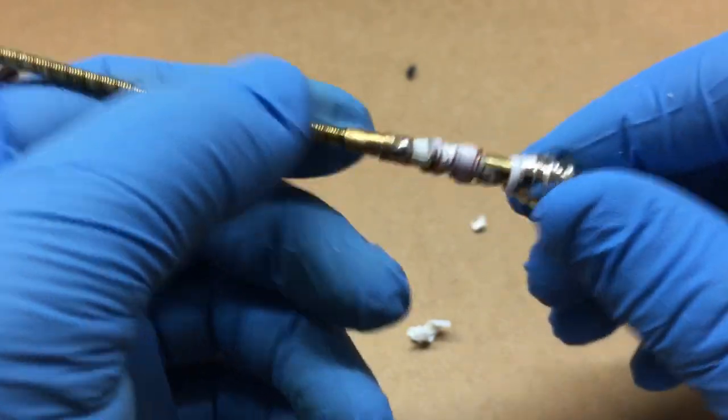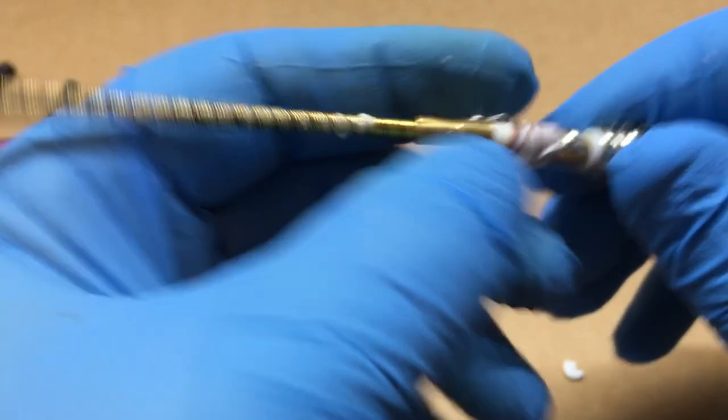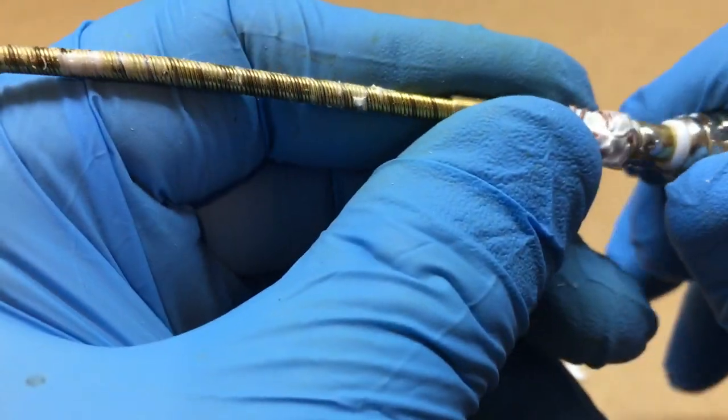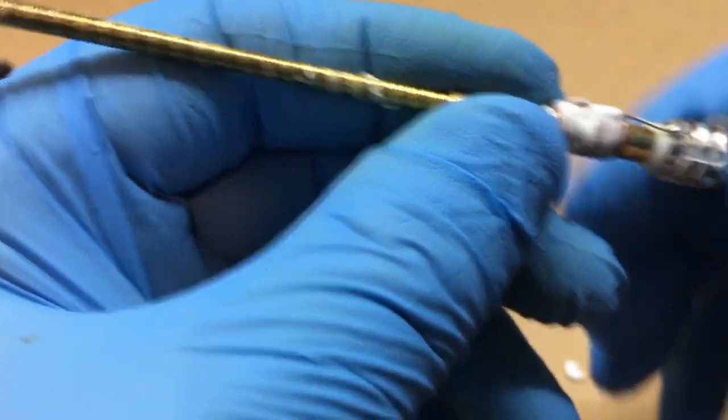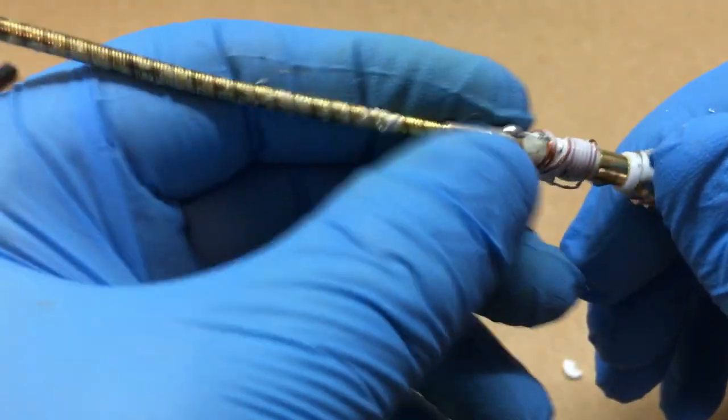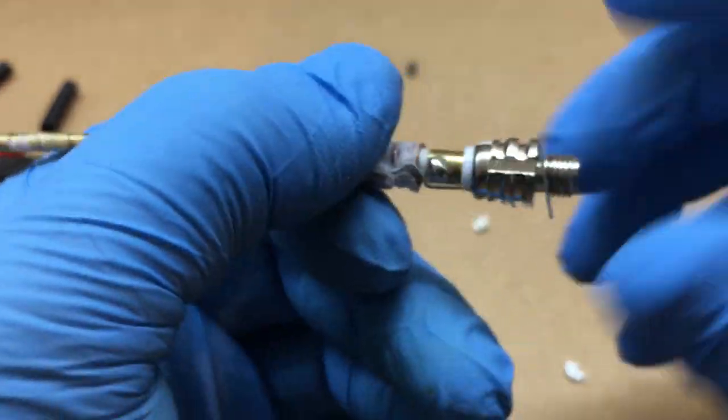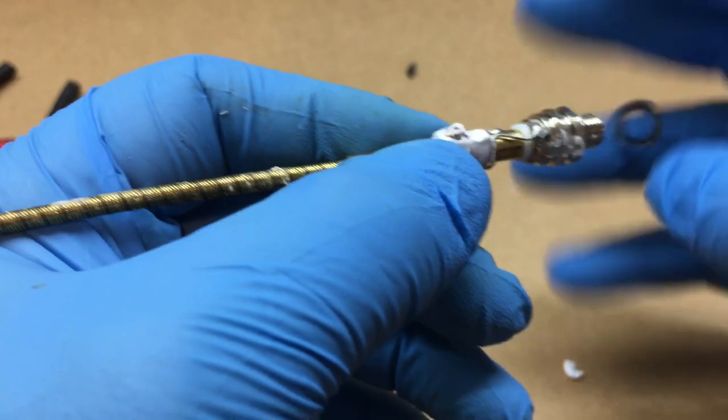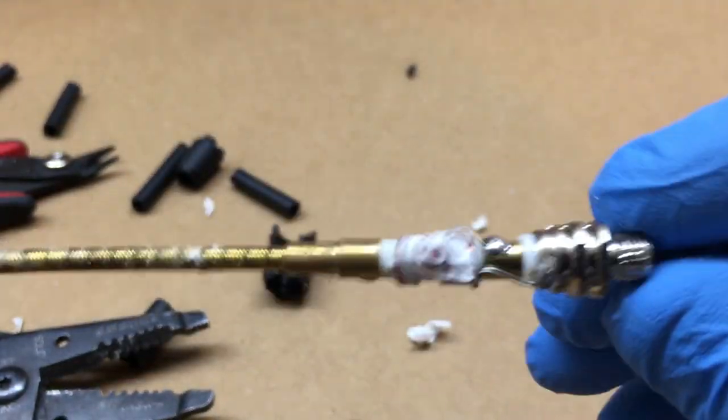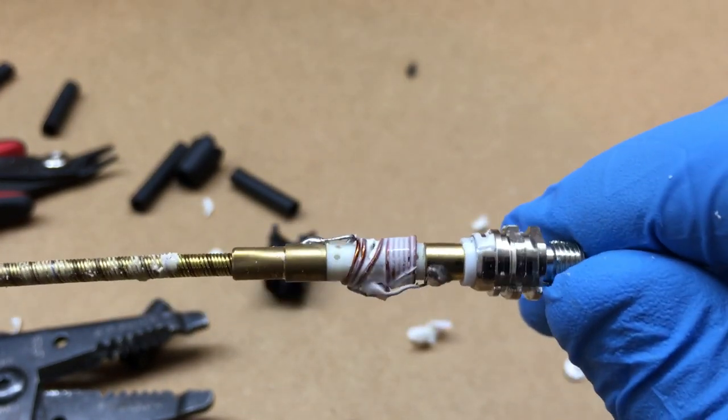Alright, so we got the rest of the plastic off of this antenna here. And as you can see, there's more of that silicone stuff. So there's what the inside of the antenna looks like.